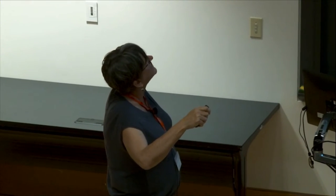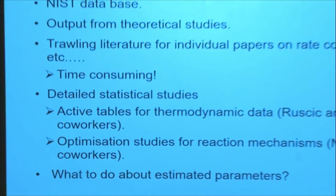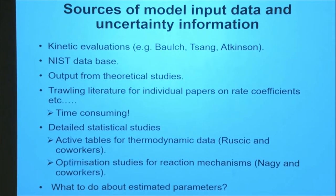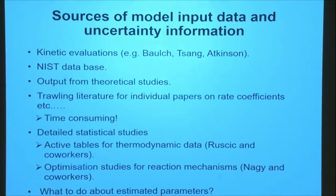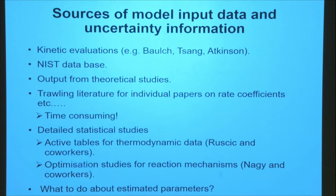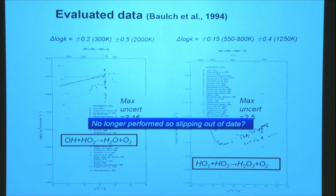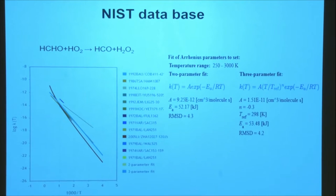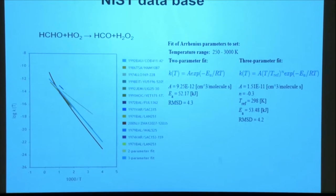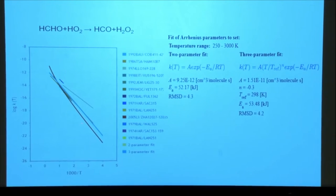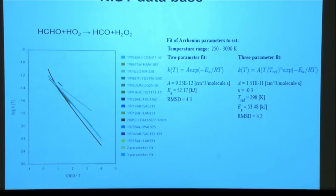The NIST database is one place where data is gathered together. It's not always up to date, but at least in the NIST database you can compare data from different sources, and NIST will give you estimated Arrhenius parametrizations and allow you to select certain data sets and calculate what the overall error might be. An example here — formaldehyde plus HO2 — you can select all the different data sources and fit either a simple Arrhenius expression or an extended Arrhenius expression and it will give you the root mean square error, which allows you to make some estimates of the uncertainty. So that is still quite a useful tool.